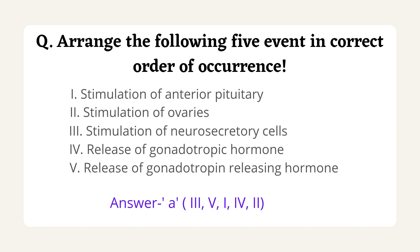The rationale: first, there is stimulation of neurosecretory cells in the hypothalamus. This leads to the release of gonadotropin-releasing hormone. The gonadotropin-releasing hormone then stimulates the anterior pituitary to release gonadotropins — follicle-stimulating hormone or luteinizing hormone. These hormones travel through the blood and stimulate the ovaries. That is why option A is correct.